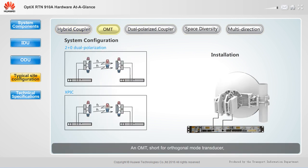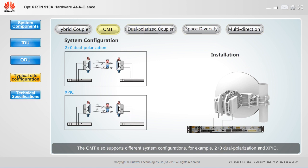An OMT, short for orthogonal mode transducer, is used to directly mount 2 ODUs with different polarization directions onto the same antenna. The OMT also supports different system configurations, for example, 2+0 dual polarization and XPIC. These configurations require a system control board, 2 ODUs, an OMT, and a dual polarized antenna.